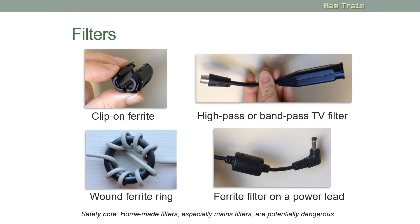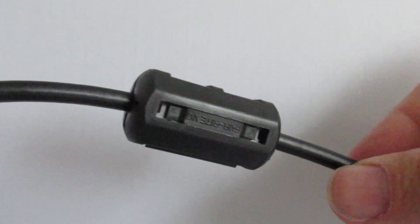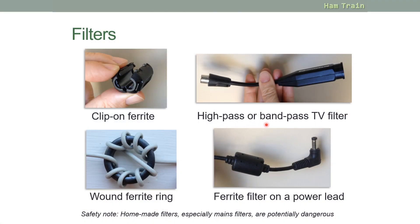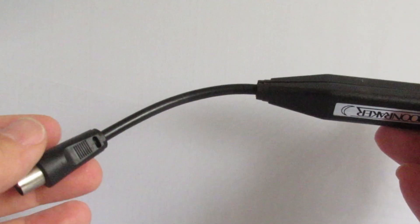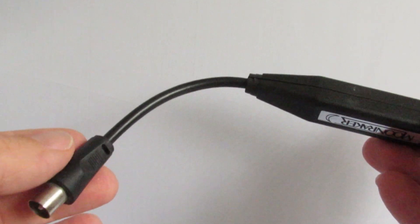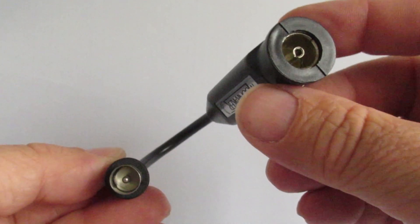A look at various filter types here. Pictured here is a clip-on ferrite. This snaps over an existing cable and can help to reduce interference. Pictured here is a device that can be used to filter out interference on a TV set. One end plugs into the TV antenna socket, and the other into the feeder to the TV antenna on the roof. These are relatively cheap and an easy way of reducing TV interference.